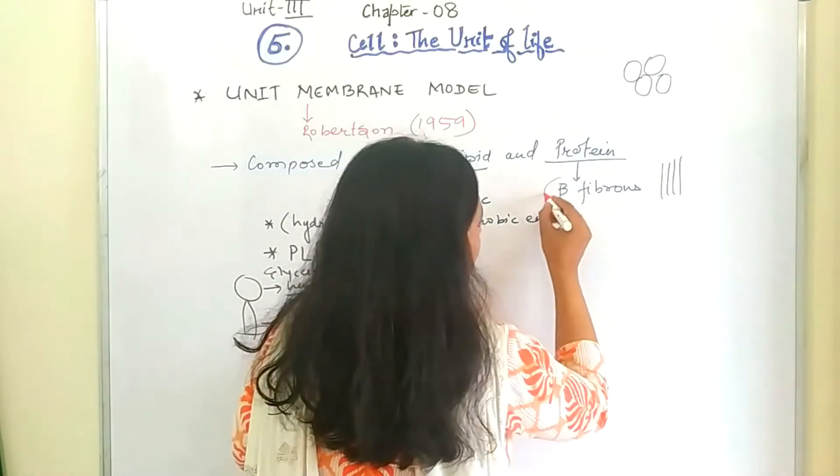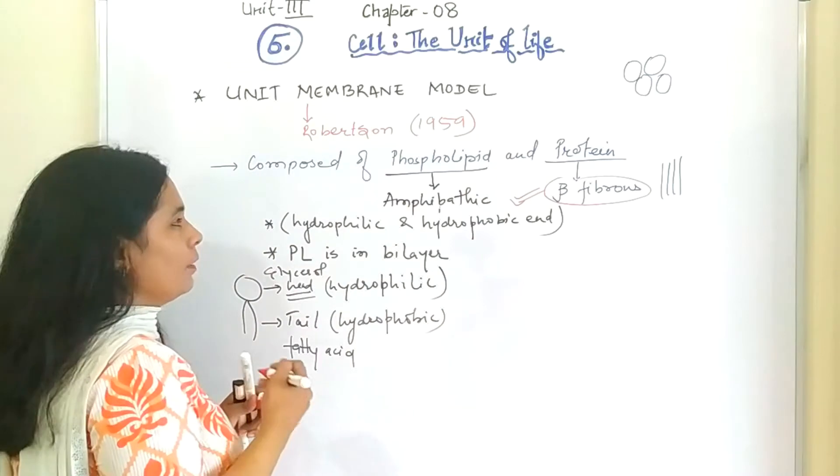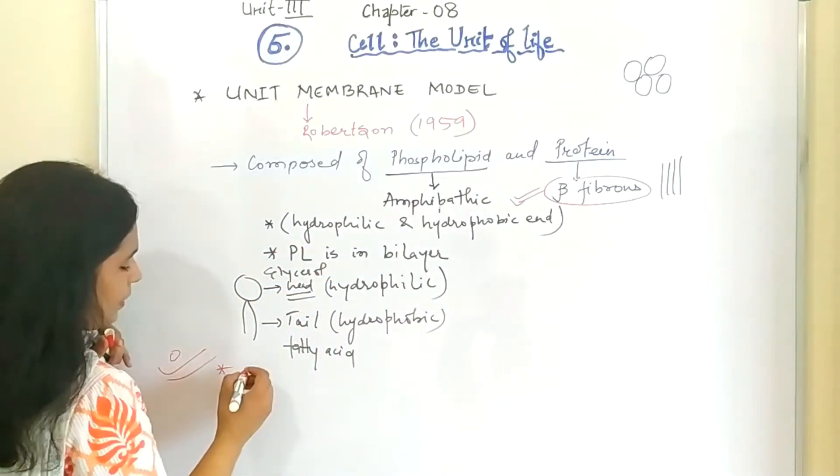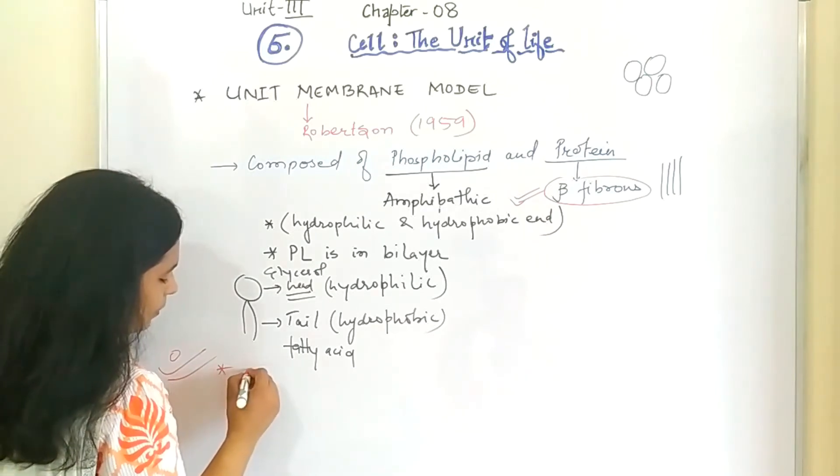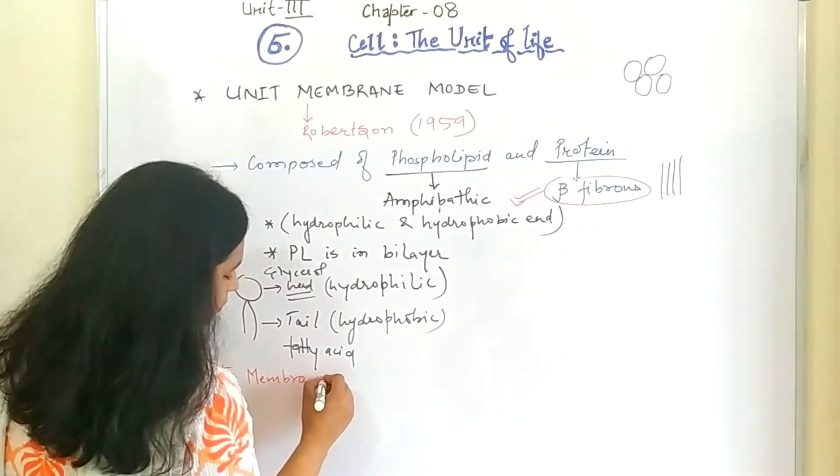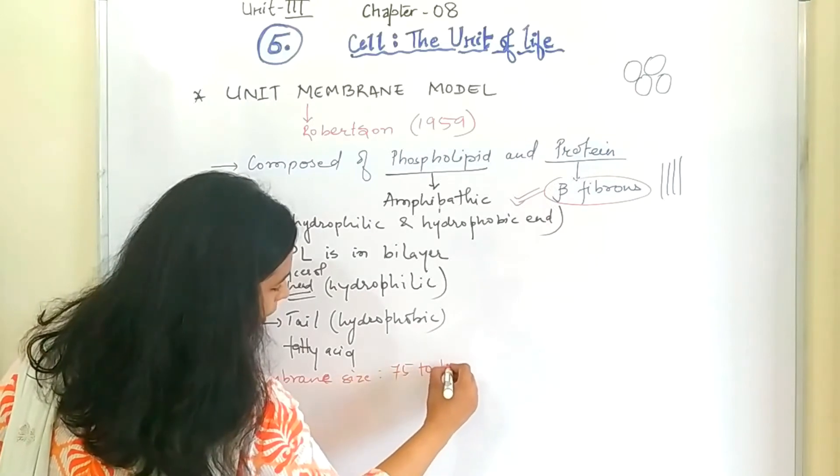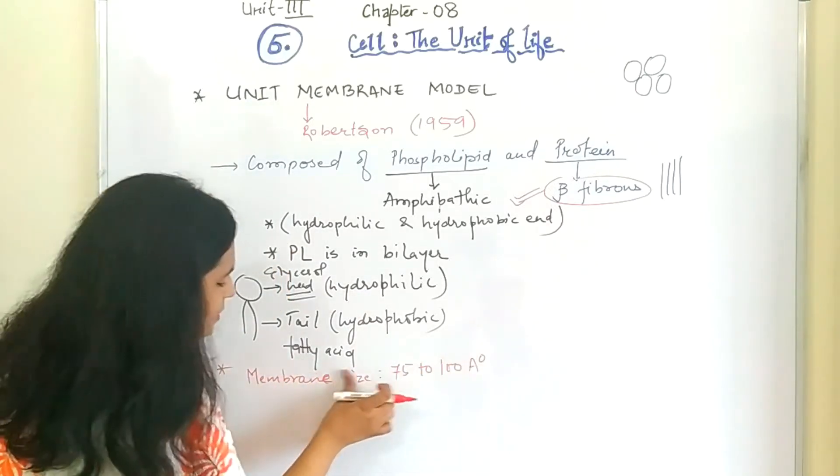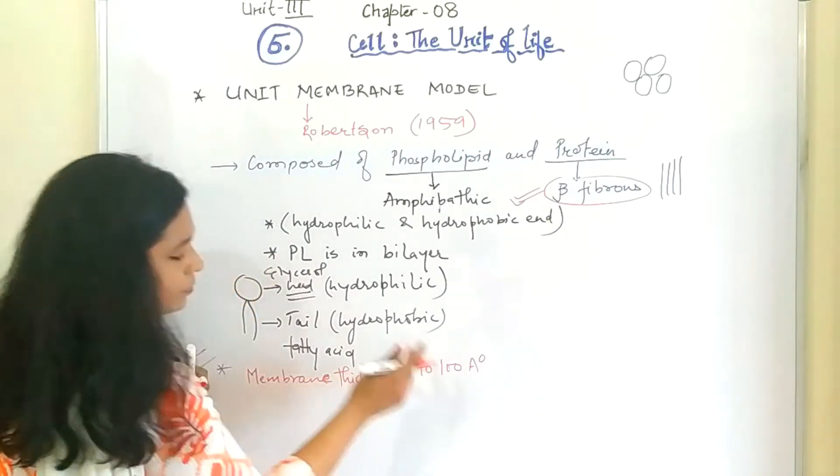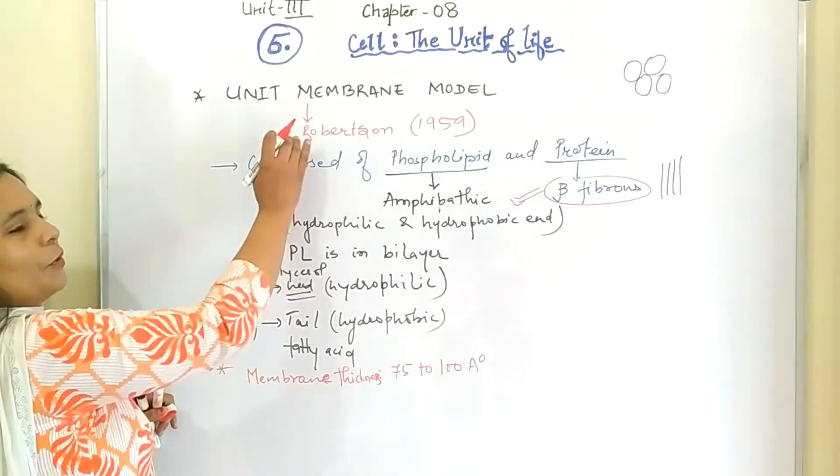But this was an added new point by Robertson. One more thing what he has added. It is very important that the membrane size is 75 to 100 Armstrong. Size and sense you can write it as thickness. Membrane thickness is 75 to 100 Armstrong and this was very important point added by Robertson.